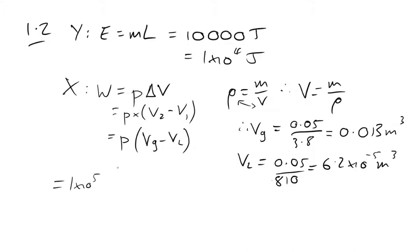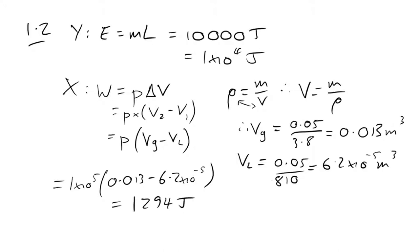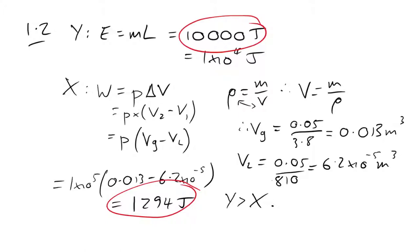So work done = 1×10⁵ Pa × (0.013 − 6.2×10⁻⁵) = 1,294 joules. So we have our energy to change state (10,000 J) and our work done in expanding (1,294 J). It takes a lot more energy to change the state than just the work done in expanding a gas — not the biggest surprise.